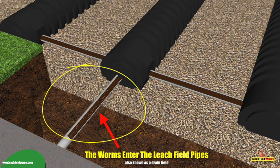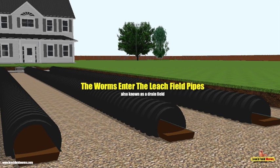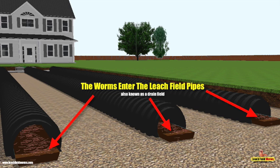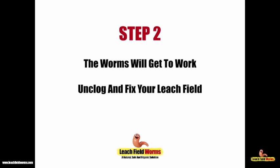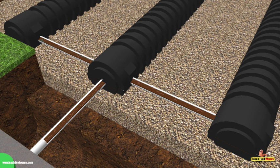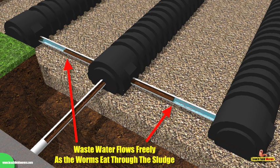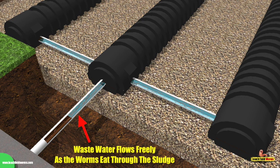As the worms continue to breed and multiply, they'll make their way through the arteries, through the sludge, deeper and deeper into the drain field. Once the leach field worms have saturated the drain field, they start to work their magic — eating the sludge clogging those drain field pipes, which allows wastewater to start flowing freely. They continue eating and clearing the sludge, unclogging the drain field pipes, once again allowing wastewater to flow freely back into the gravel and naturally into the soil where it can be discharged and disposed of.